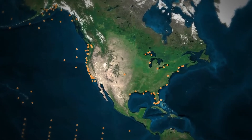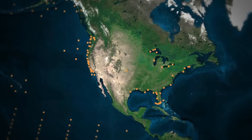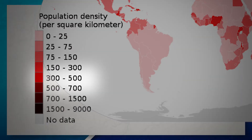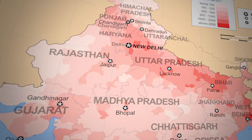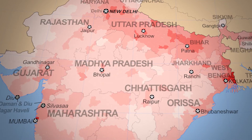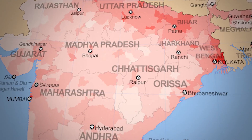Always take into account the scale that is being used to display the data, as depending on the scale, the data may be more specific or more general. For example, when looking at a small scale map of population density, we can see that India has 300 to 500 people per square kilometer. However, if we zoom in, we can see that India's population density varies depending on what part of the country you are looking at. So while choropleth maps are very visual, they can sometimes simplify information too much, which could give us a distorted perspective.